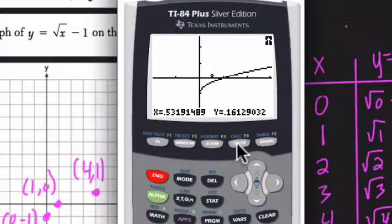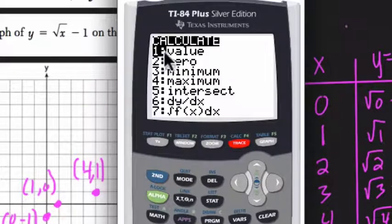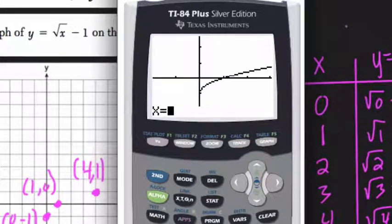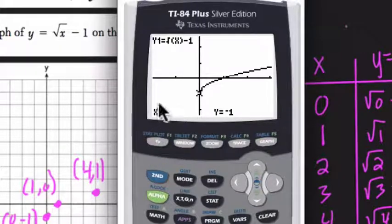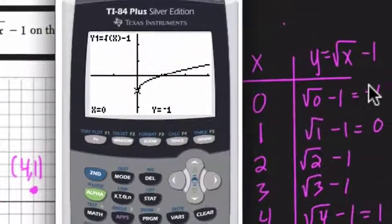We can hit second trace. If we hit value here, the first one, any input we put in for x, it'll tell me the output. So if I enter in 0, like I just did, it tells me the output's negative 1, which matches what we got here on our table.